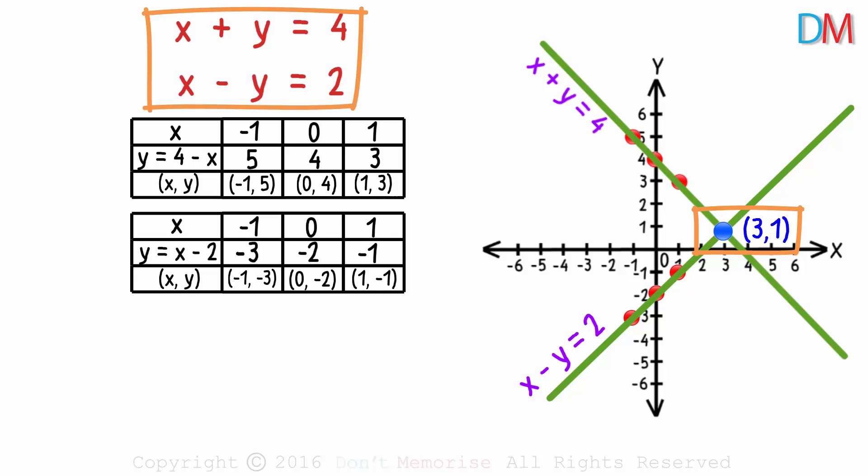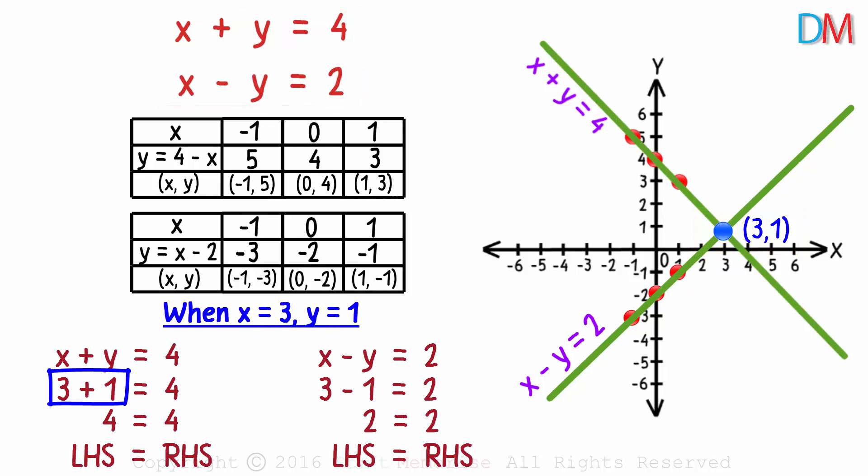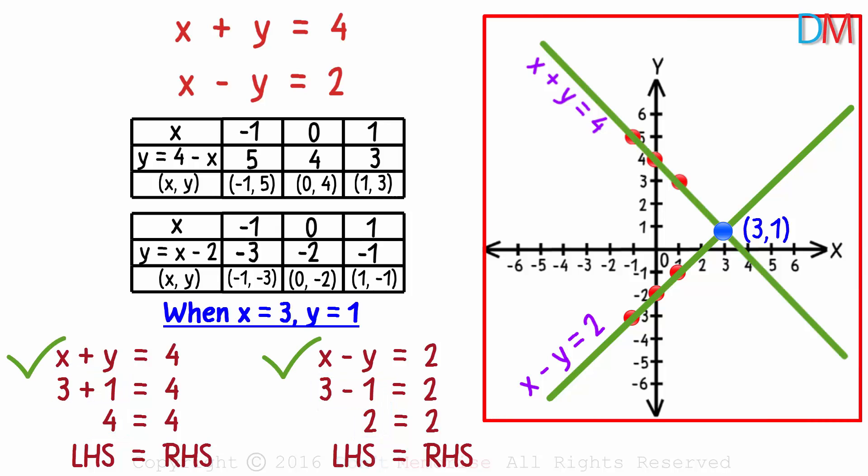You can even try it out mathematically. 3 plus 1 is 4 and 3 minus 1 is 2. Both equations are satisfied. So plotting graphs of pairs of linear equations also gives us the solution.